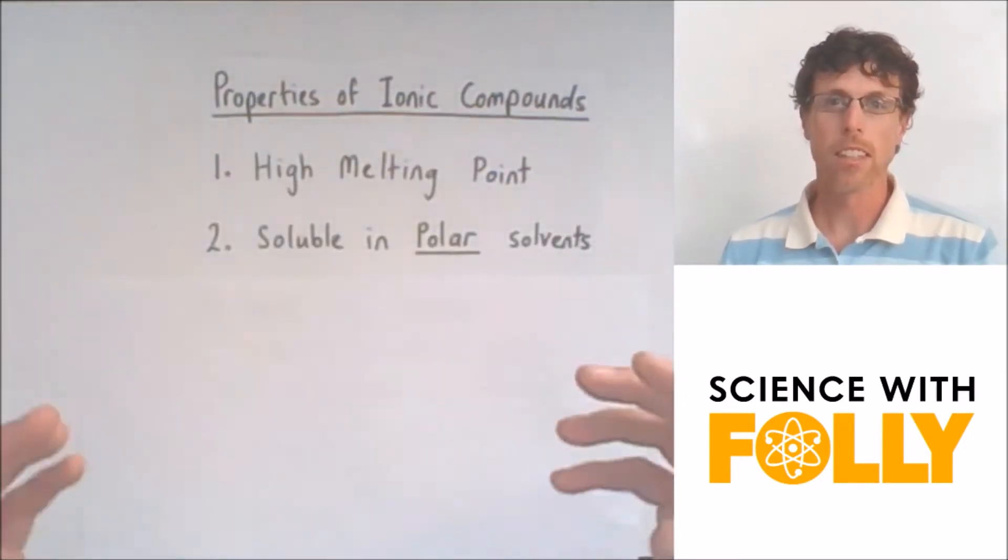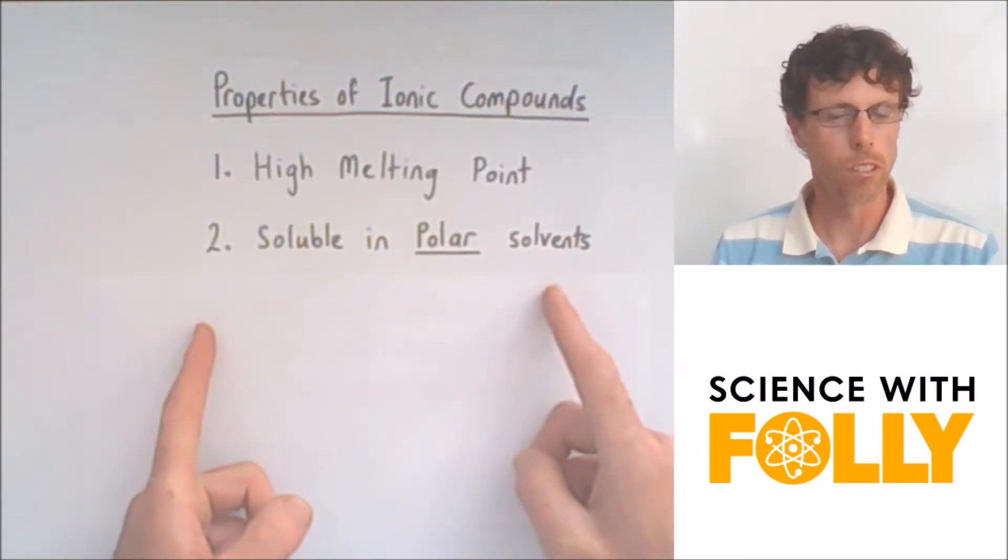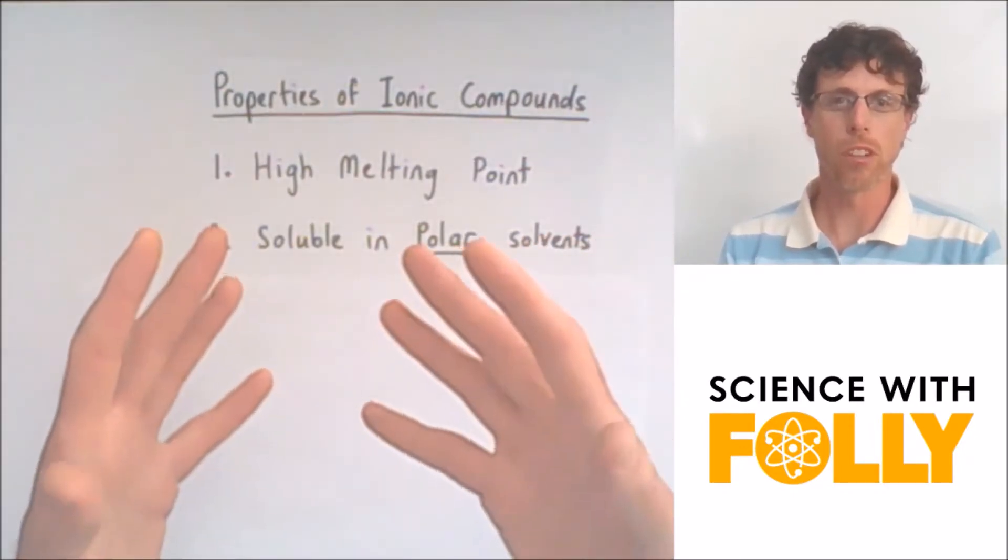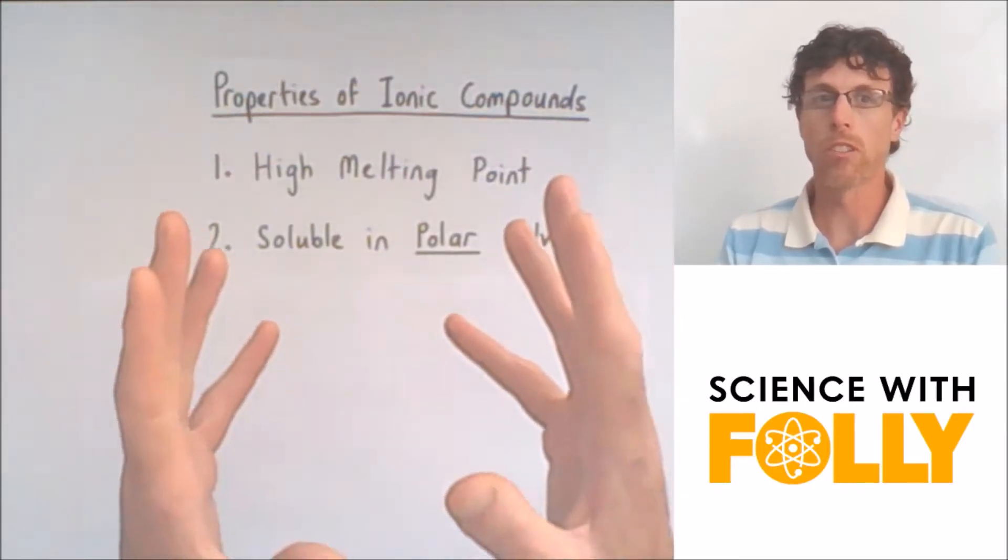Secondly, is that ionic compounds are only soluble in polar solvents. For example, when you put salt into water, it dissolves.